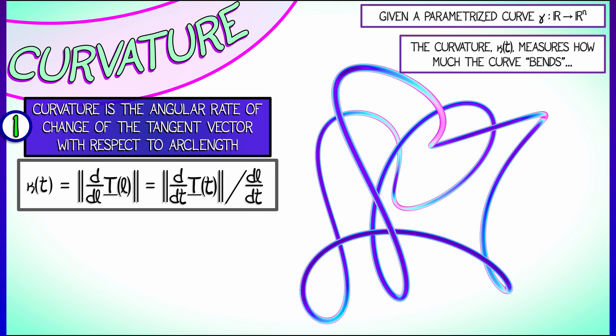Normally you don't have an arc length parametrized curve. If you want to compute the derivative with respect to the time parameter, then with a simple application of the chain rule, you can see that what you need to do is divide out by dL/dt.